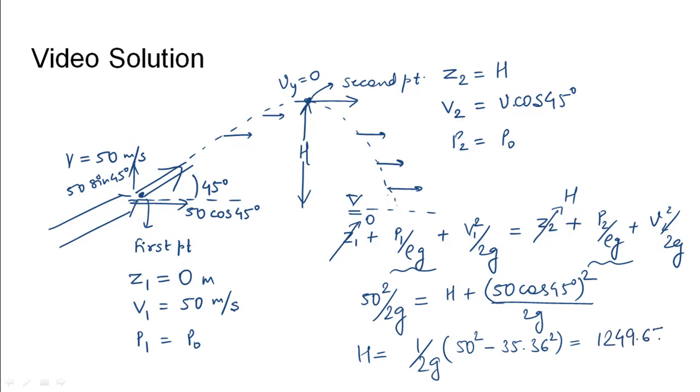This would be 1249.67 over 19.62, which would be around 63.69 meters, since the question asks us to approximate it to two decimal places.